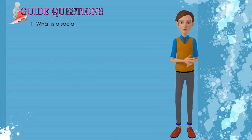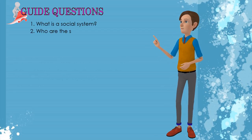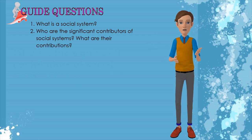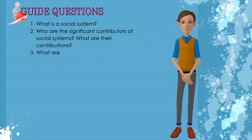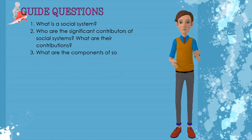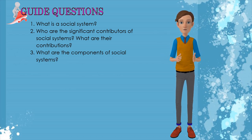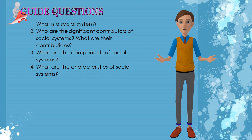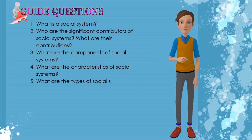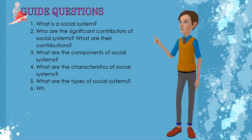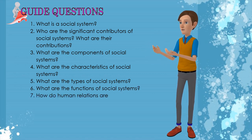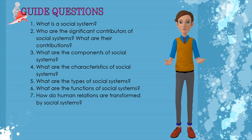1. What is a social system? 2. Who are the significant contributors of social systems? What are their contributions? 3. What are the components of social systems? 4. What are the characteristics of social systems? 5. What are the types of social systems? 6. What are the functions of social systems? 7. How are human relations transformed by social systems?